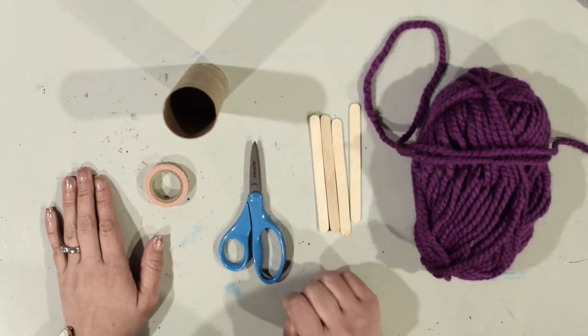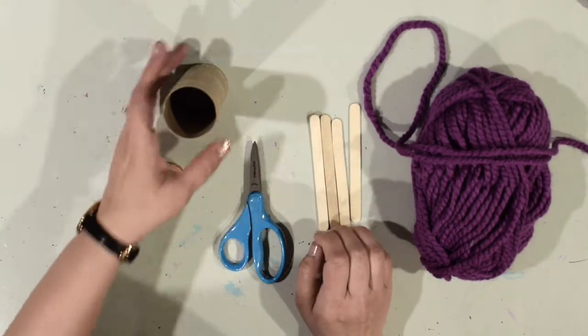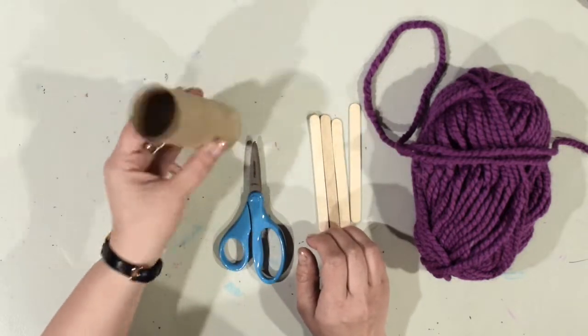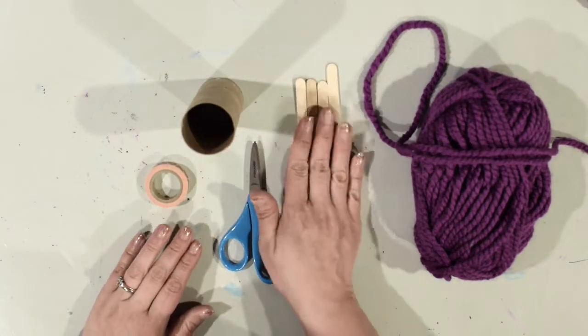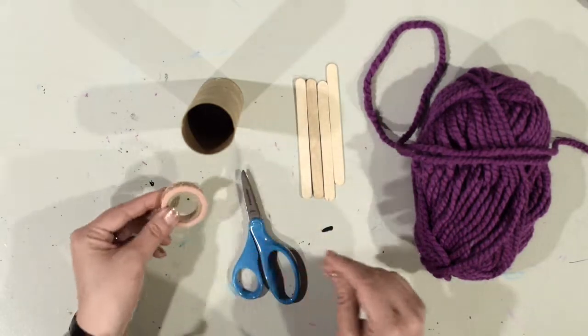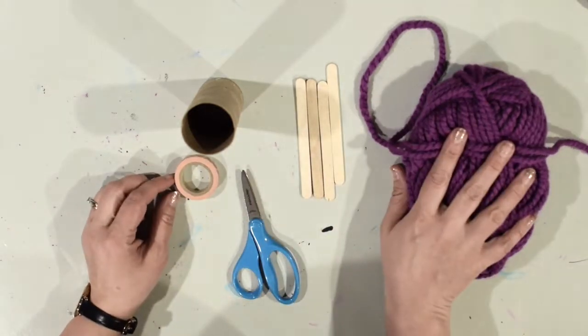Okay, I've gathered my supplies that I'm going to need for my tube knitting. So you're going to need a toilet paper roll, an empty roll, four popsicle sticks, a pair of scissors, some kind of tape - it can be any kind of tape at all that you have around your house - and some yarn.